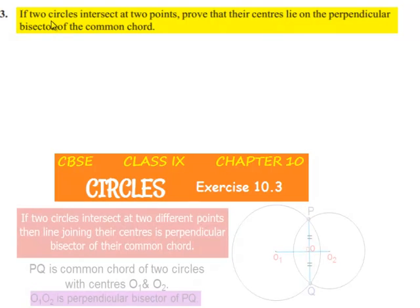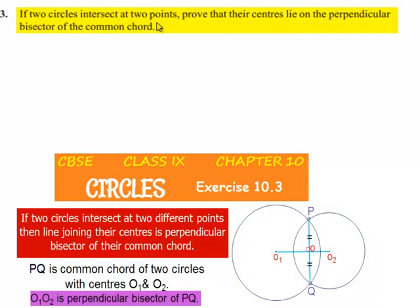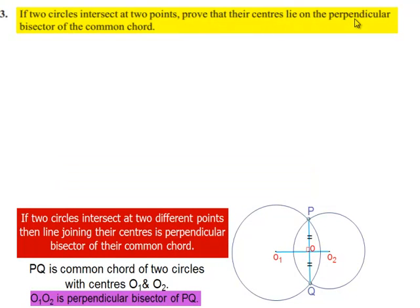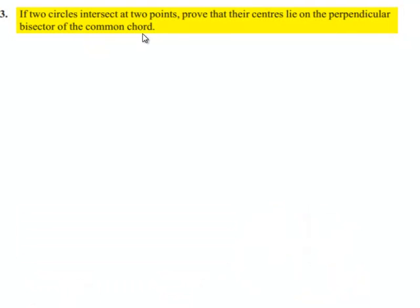Moving on to the third question: if two circles intersect at two points, prove that their centers lie on the perpendicular bisector of the common chord.